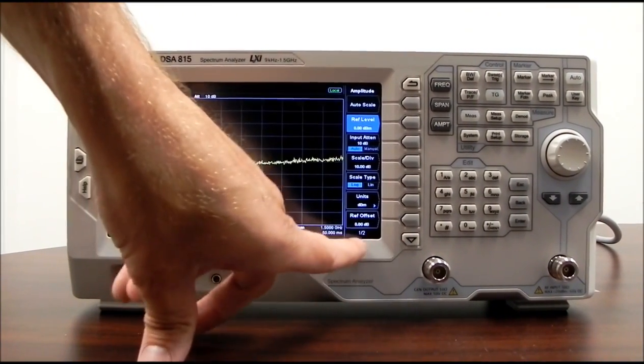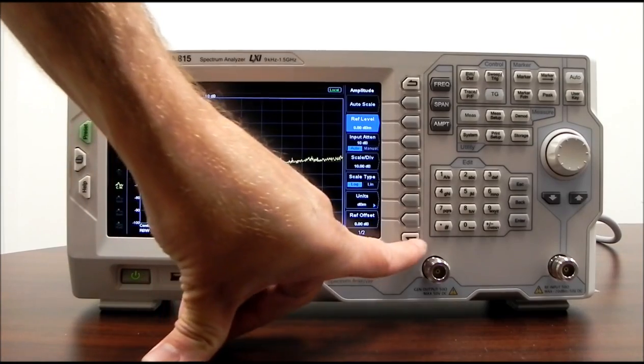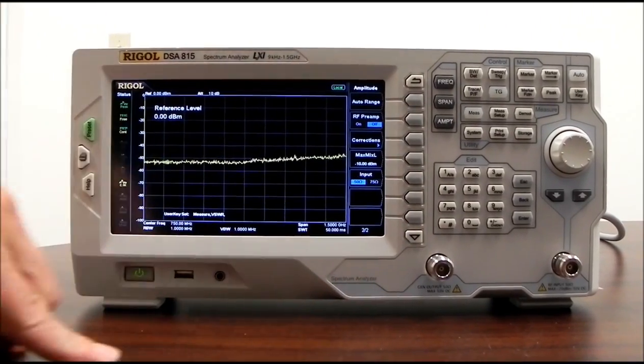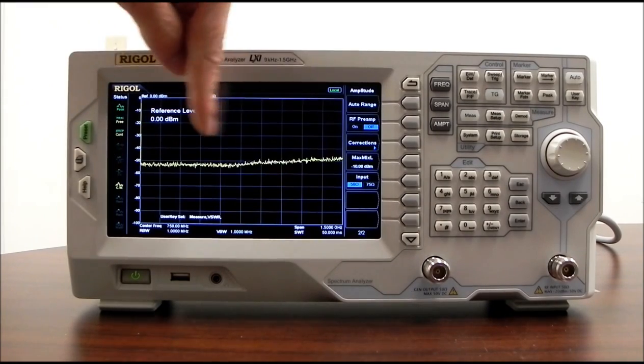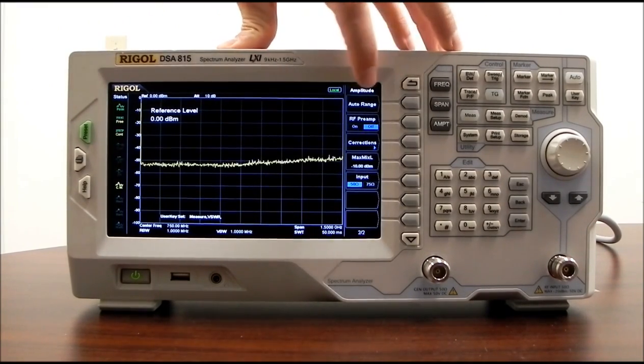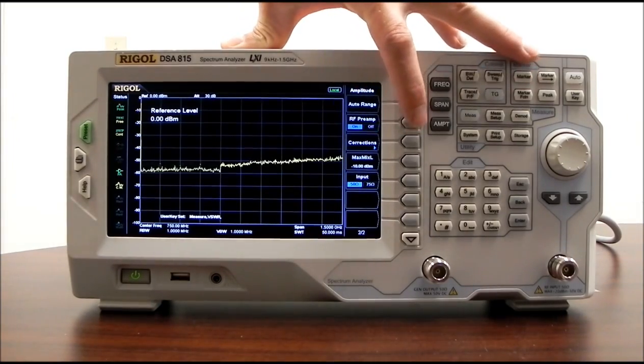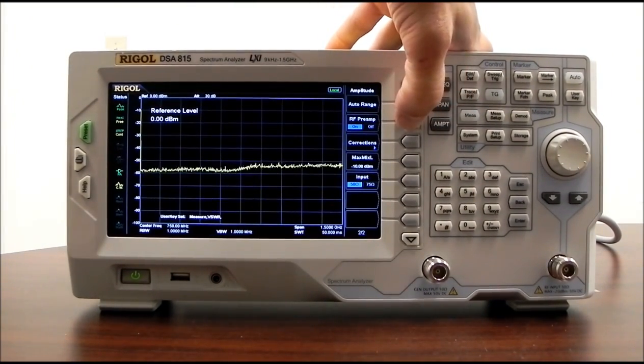Down here it says 1/2. That means we're on menu page 1 of 2. So we can down arrow to get to the second page. And now we have auto range, which is going to select the right range value for the amplitude of the signal that we have. Also standard with the DSA 815 is an RF preamplifier. So we can enable that and you'll note that the noise floor then drops. I think it's a 10 dB RF preamplifier.